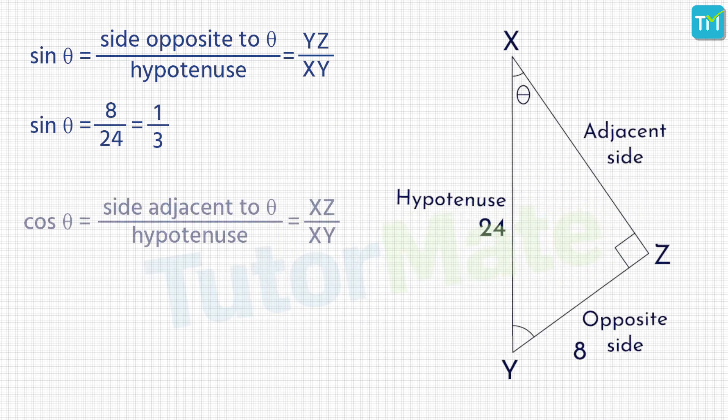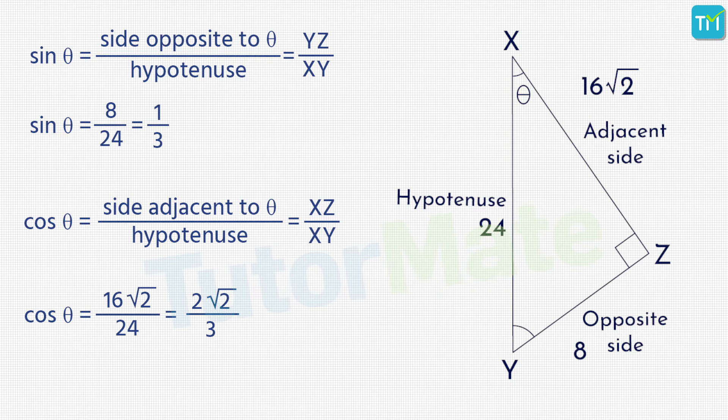Next, cos θ is given by adjacent side upon hypotenuse, which will be 16√2 upon 24. On dividing the numerator and denominator by 8, this will reduce to 2√2 upon 3. Therefore, cos θ = 2√2/3.